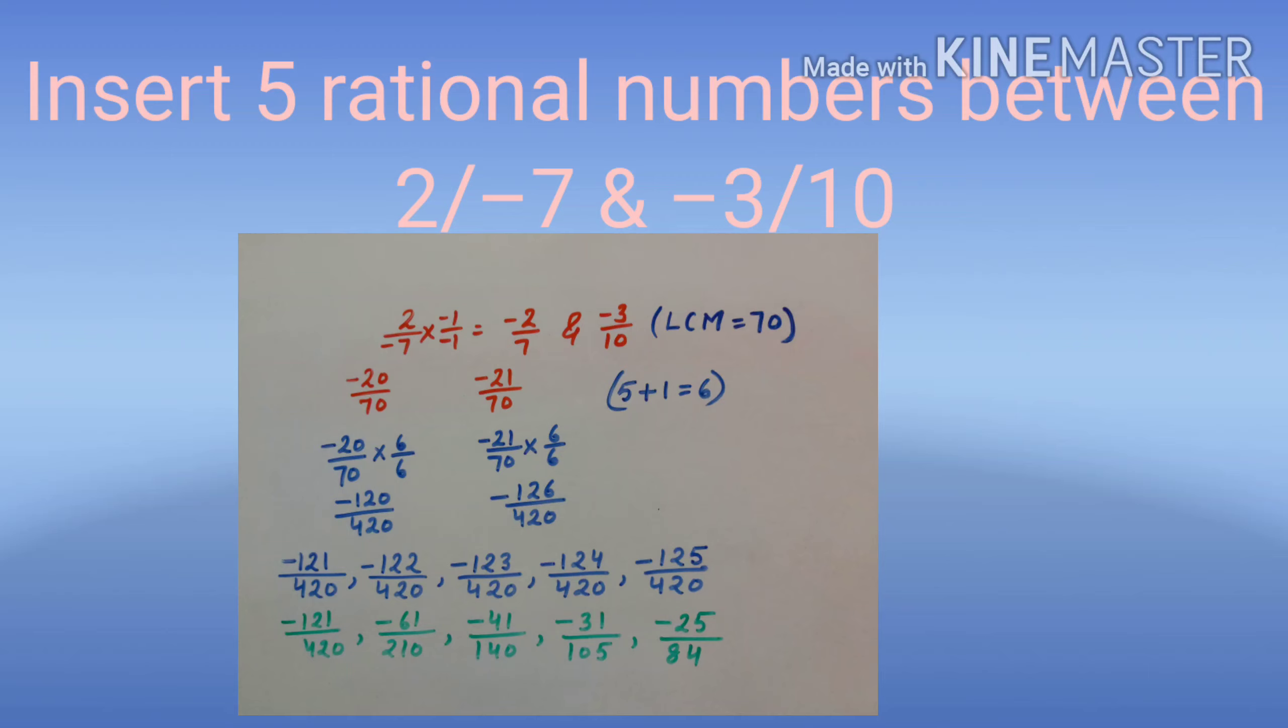Now, write integers between minus 120 and minus 126 as numerator, and denominator will be same as 420 here. So, answer is minus 121 upon 420, minus 122 upon 420, and so on. If you want, you can convert these rational numbers into standard form by reducing.